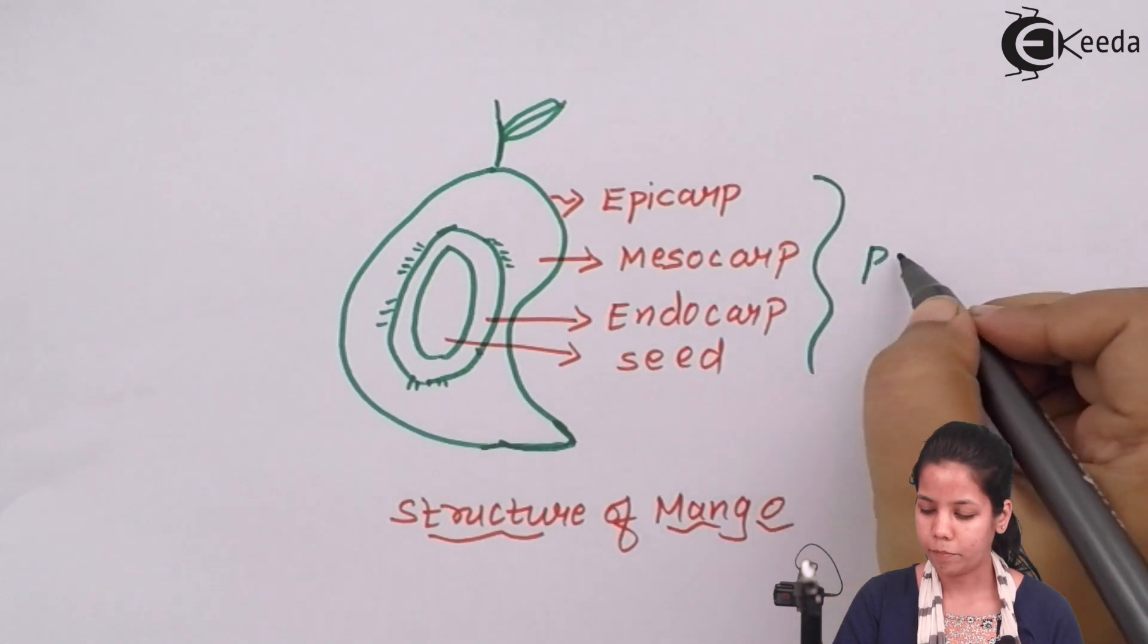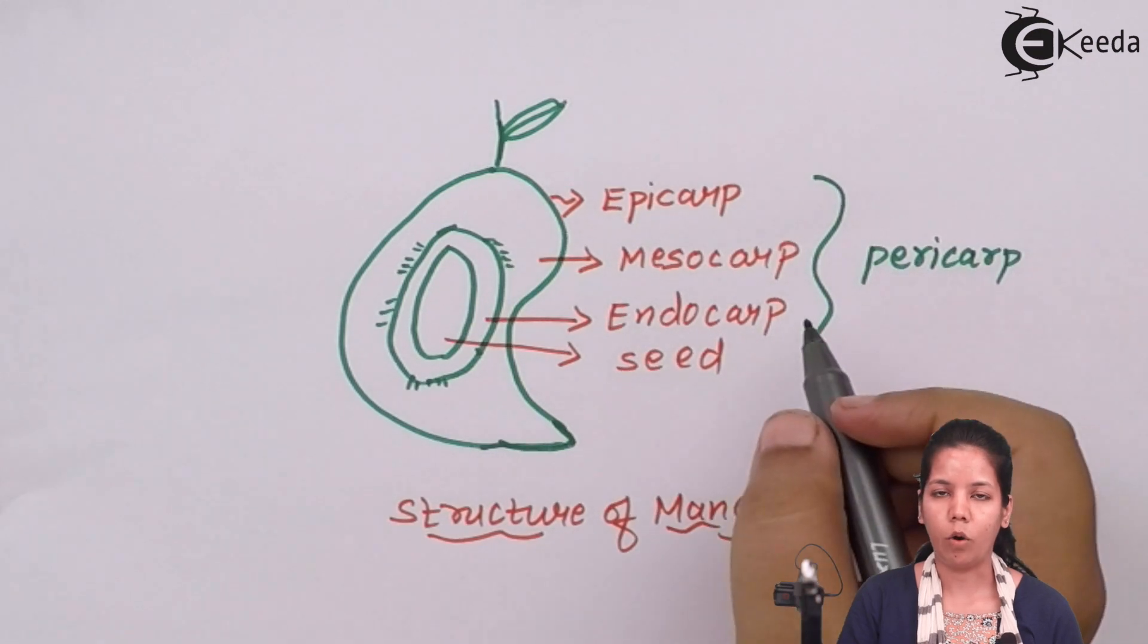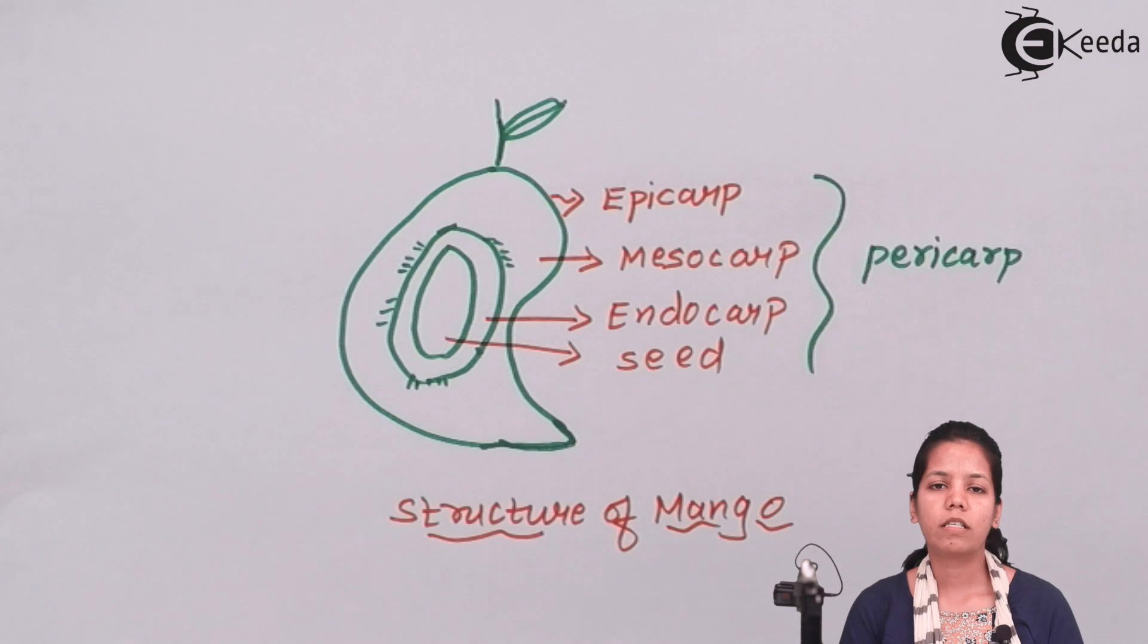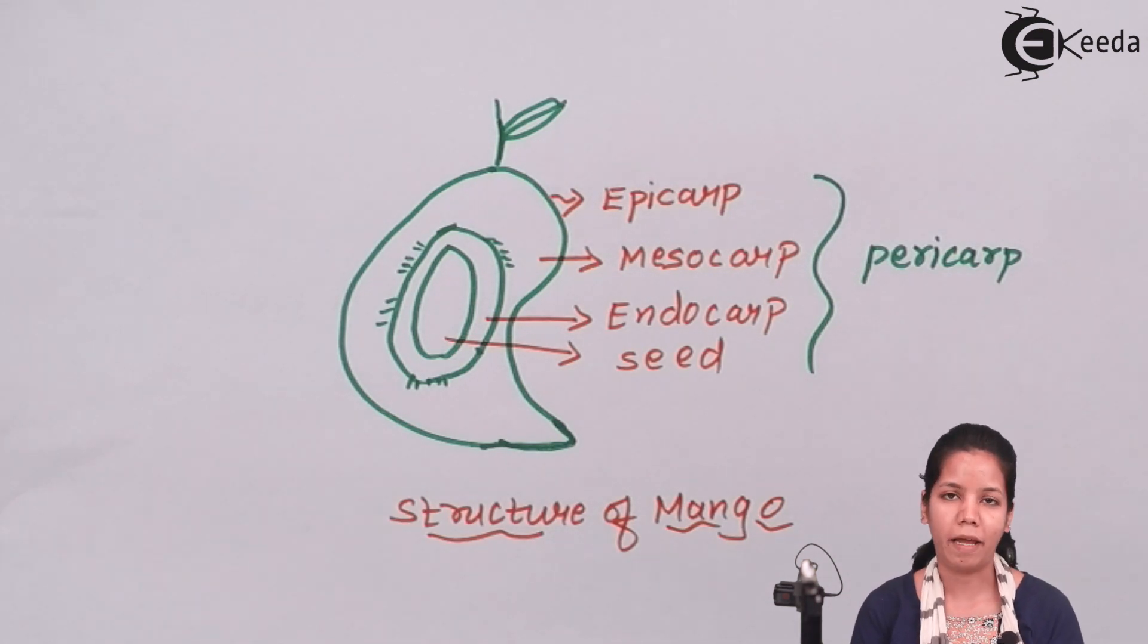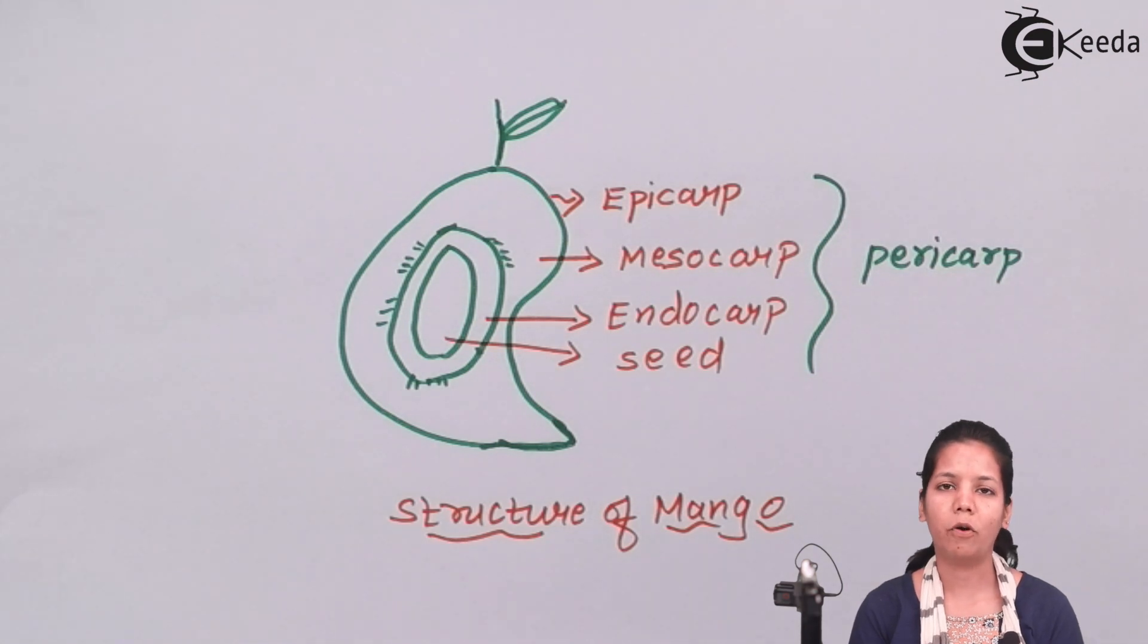Together these form the pericarp, all the layers of the fruit. In this part of the chapter, we've seen the structure of mango, its various layers, and which layer we consume. We've also seen that mango is a true fruit that develops from the ovary alone. I hope you're all clear about the structure of a fruit.